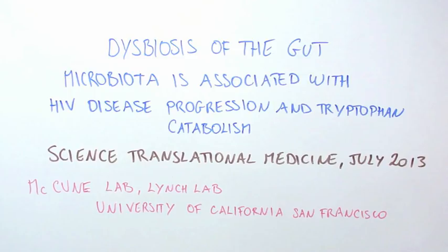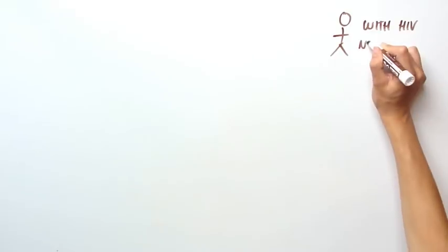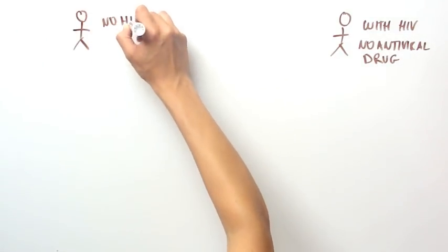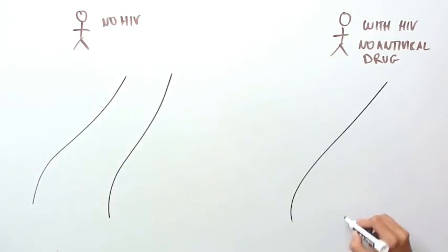It was published by the McCune and Lynch Labs at the University of California in San Francisco. The scientists took patients that had HIV but were never treated with antiviral drugs, and patients that were HIV negative, and examined their gut microbiome.